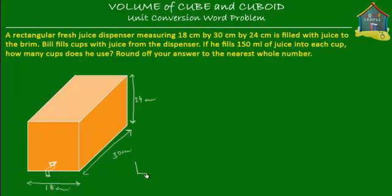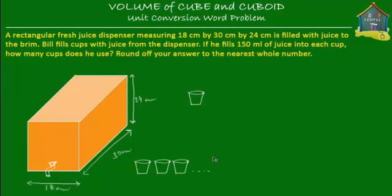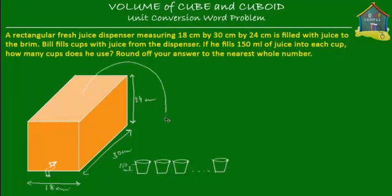Let's say that this is the cup that Bill uses for the juice. He uses a few of them, so let's copy and paste a few. We don't know how many, so we just put dot dot dot. Now into each cup he pours 150 ml of juice. He takes the juice from the dispenser, maybe through the tap, and pours it into these cups. All the juice from this dispenser is now into these cups.